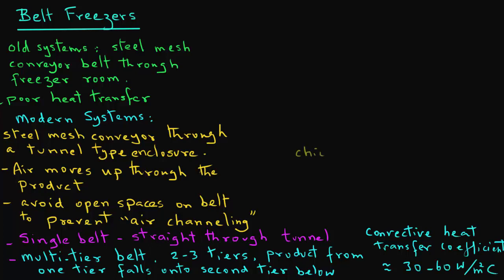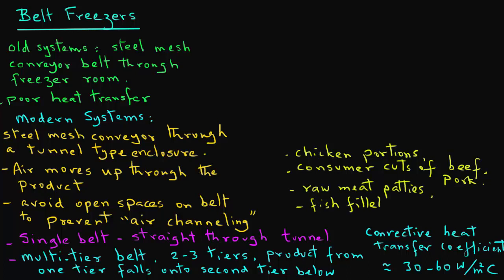Some of the common products frozen using belt freezers are chicken portions, consumer cuts of beef and pork, raw meat patties, fish fillets, and french fries.